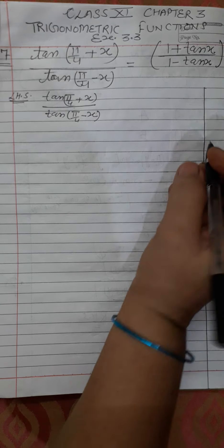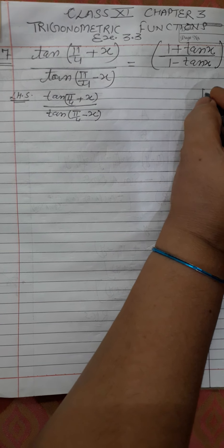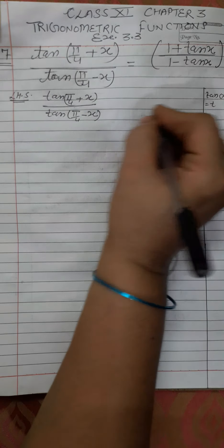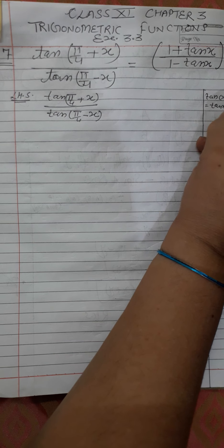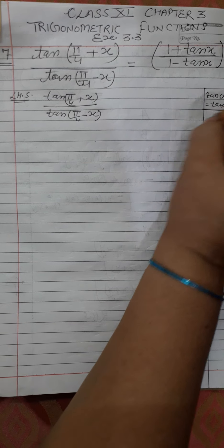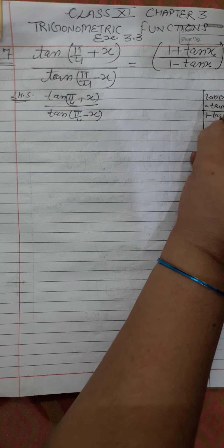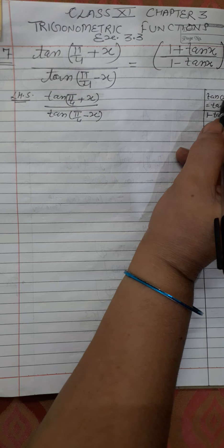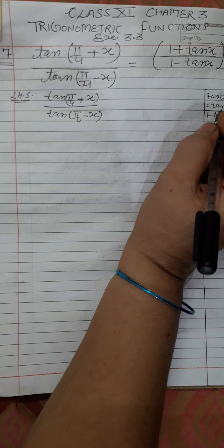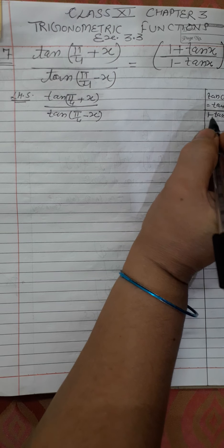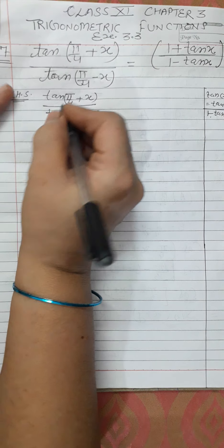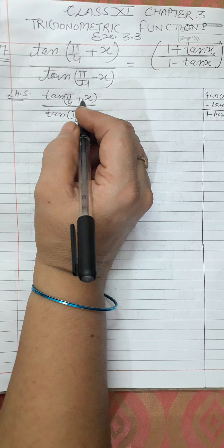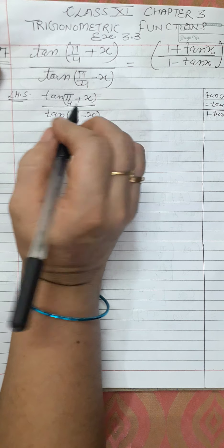We know the identity: tan(a + b) = (tan a + tan b) upon (1 − tan a · tan b). We will apply the sum identity on the numerator and the difference identity on the denominator.